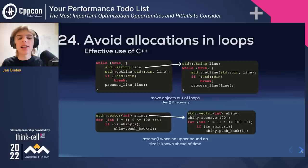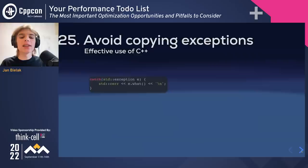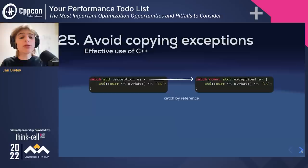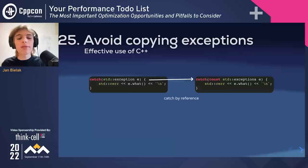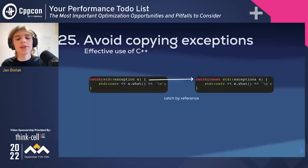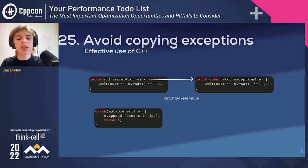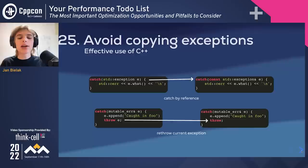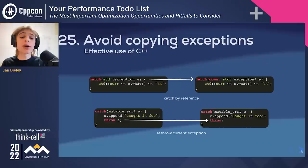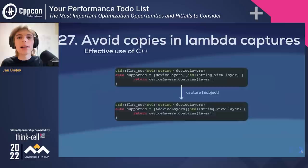A different copying pitfall is catching exceptions by value. Similarly to function parameters, if we don't need to copy the exception object, capturing it by reference can be more efficient and prevents slicing exceptions if their dynamic type differs from the caught type. Exceptions must be captured by reference if we want to modify the original instance; however, if we are going to re-throw, it is better to use the re-throw syntax rather than re-throwing the captured reference — the compiler can better optimize and potentially save some copies. Other places where capturing by reference can improve performance are range-based for loops, lambda captures, and structured bindings.